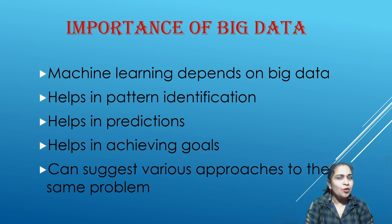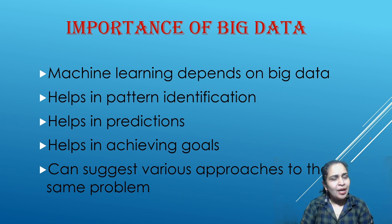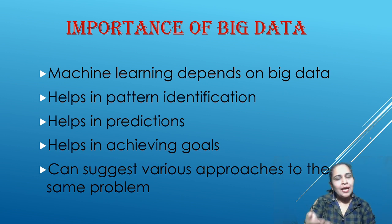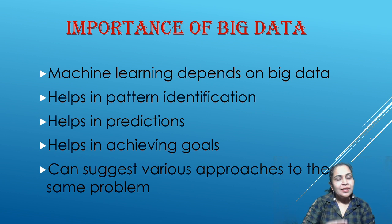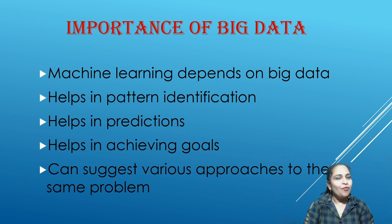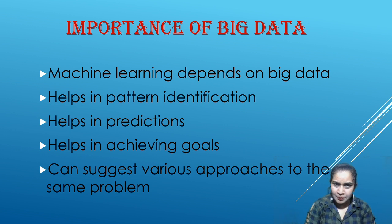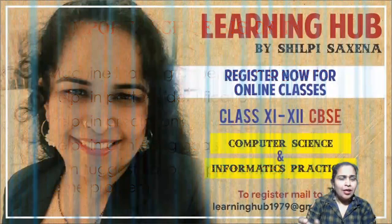The importance of big data: machine learning totally depends on big data. It collects and manipulates data to give decisions and results. It helps in pattern identification — for example, based on what you are clicking, the next suggestion is generated. It helps in prediction — predicting that you are going to purchase a particular product. It can also suggest various approaches to the same problem, providing different solutions. This concludes our data type categorizations.